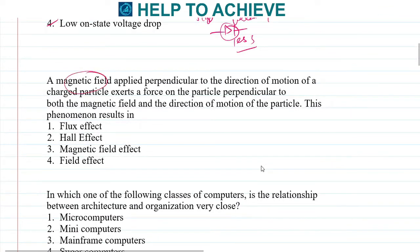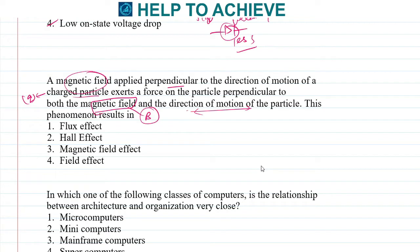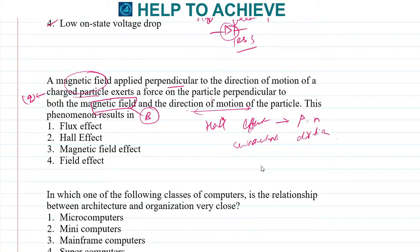Next: a magnetic field applied perpendicular to the direction of motion of a charged particle exerts a force on the particle perpendicular to both the magnetic field and the direction of motion. This is the basic definition of the Hall effect, which is used in semiconductors to determine the type of diode — p or n — and the direction. The correct answer is the Hall effect.